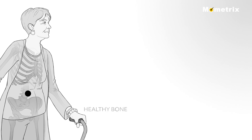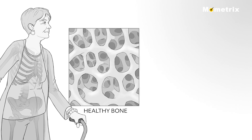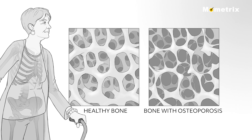The inside of a healthy bone has small spaces like a honeycomb. But in osteoporosis, the size of those spaces has increased, causing the bone to lose density and strength and to become weaker and thinner.